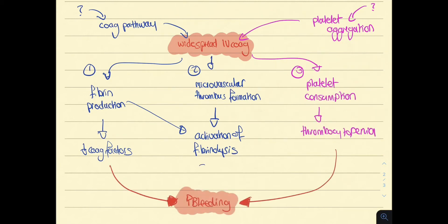Decreased coagulation factors and thrombocytopenia mean bleeding cannot be controlled. Fibrinolysis also causes the production of fibrinogen degradation products, which can be measured. The two hallmarks of DIC are continuous generation of intravascular fibrin and depletion of platelets. If you have forgotten about secondary hemostasis, you might want to check out our secondary hemostasis video.